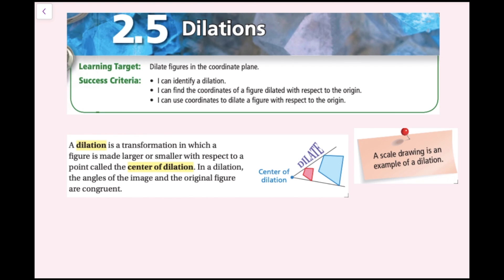In this lesson we're going to be talking about dilations. The success criteria is: I can identify a dilation, I can find the coordinates of a figure dilated with respect to the origin, and I can use coordinates to dilate a figure with respect to the origin.